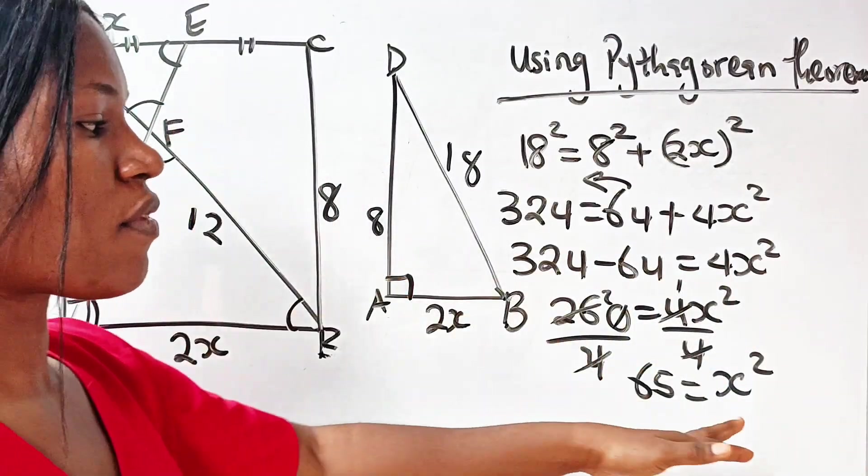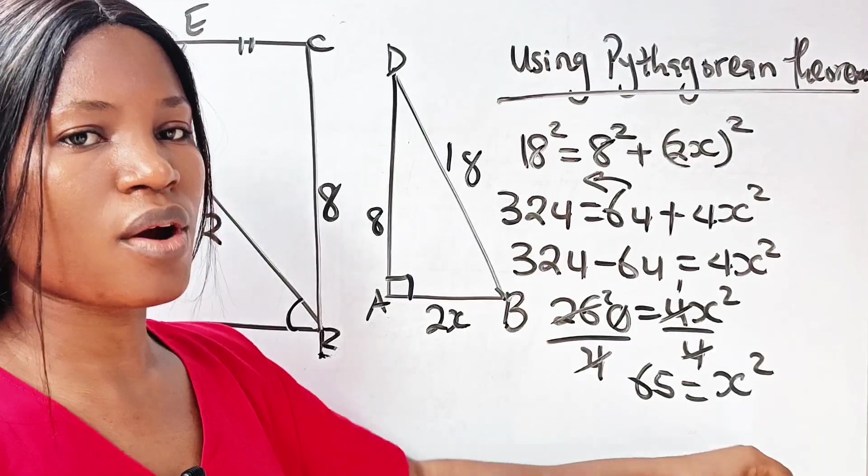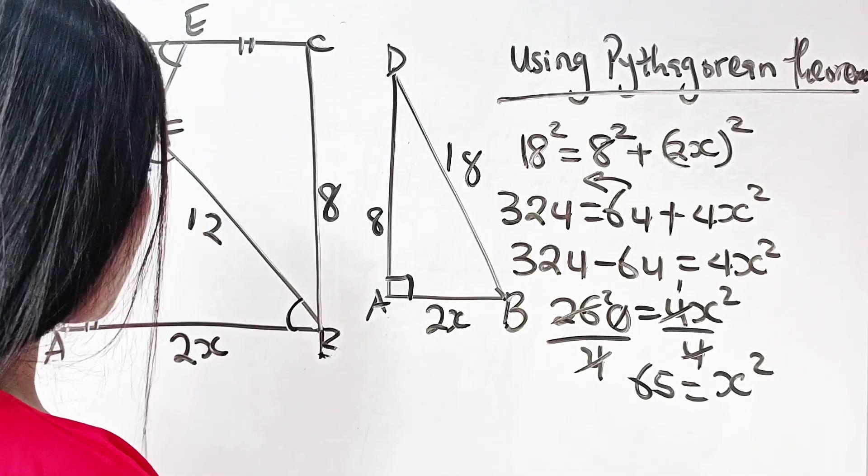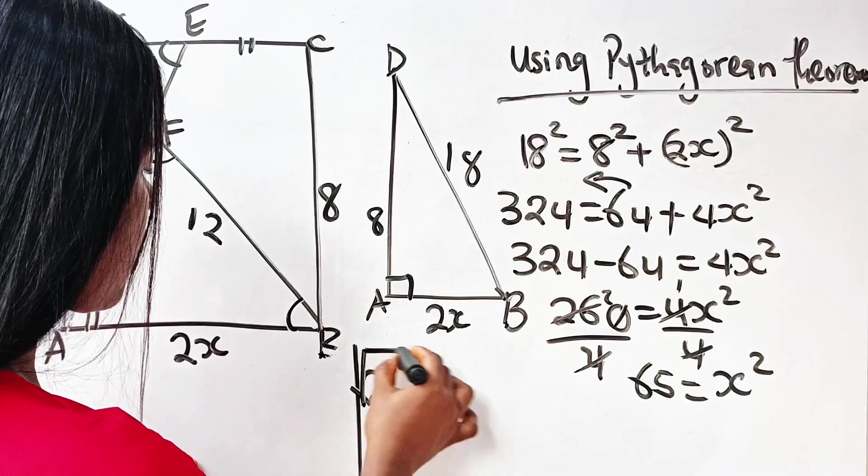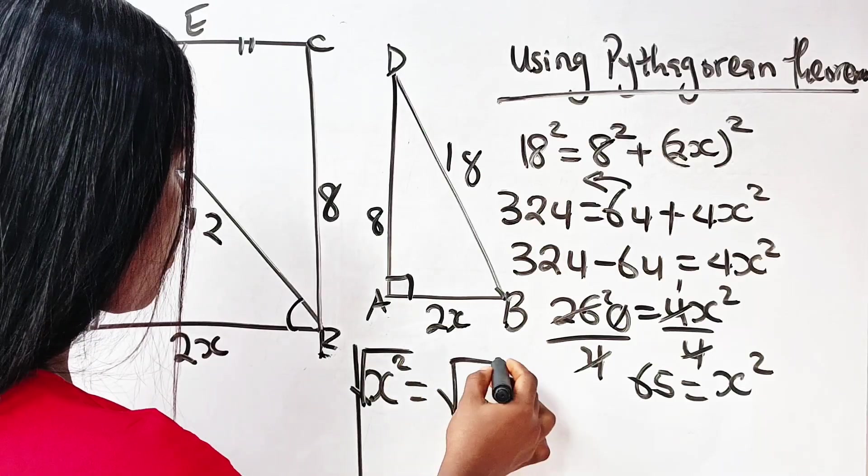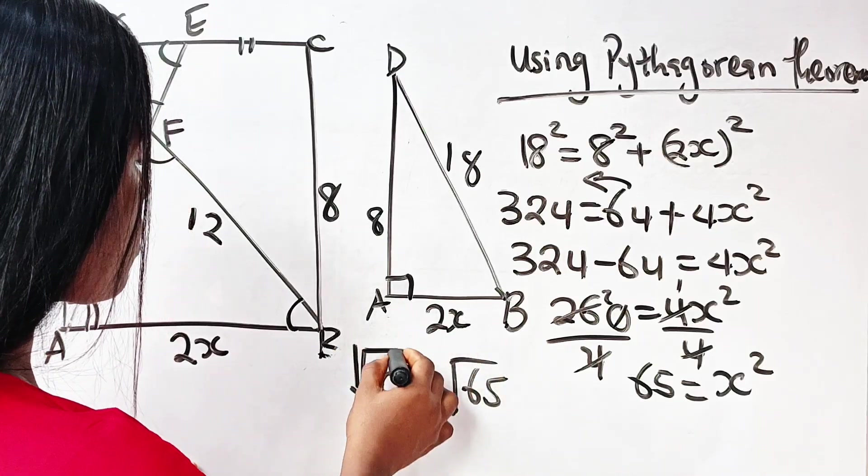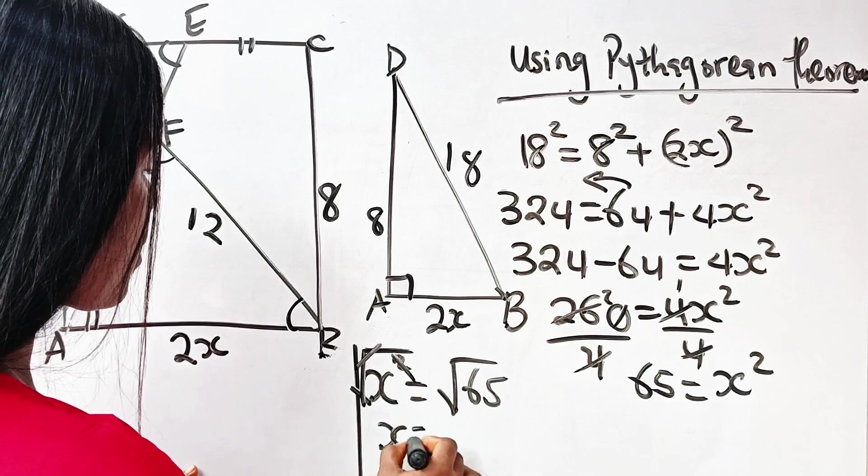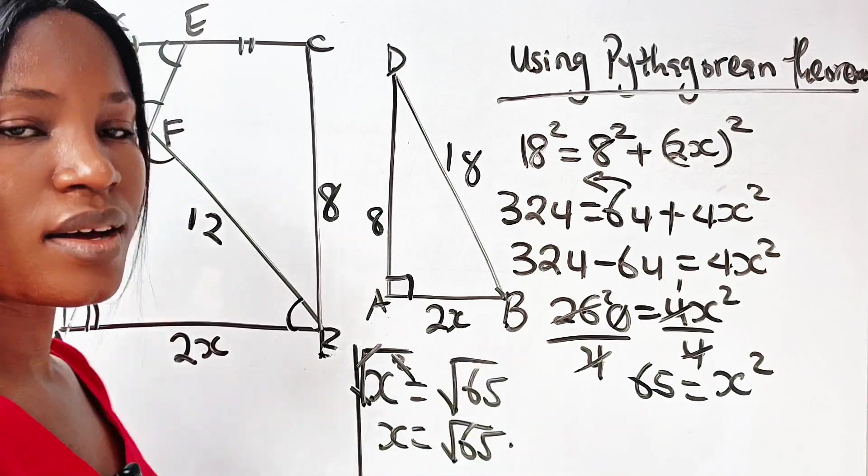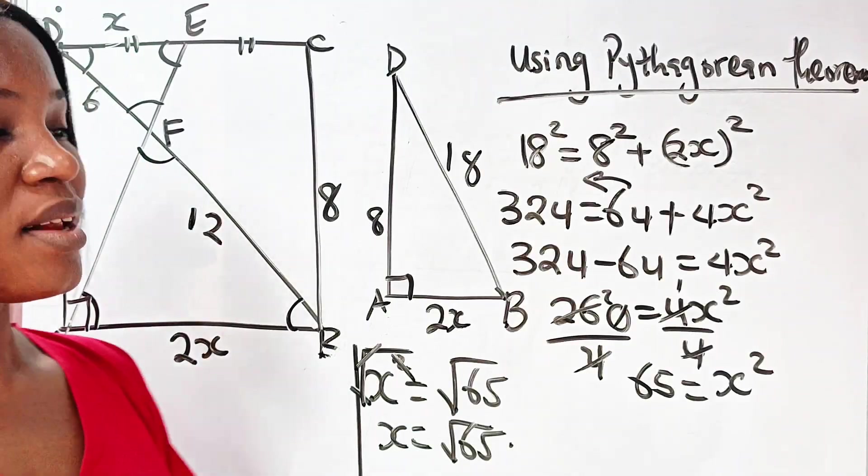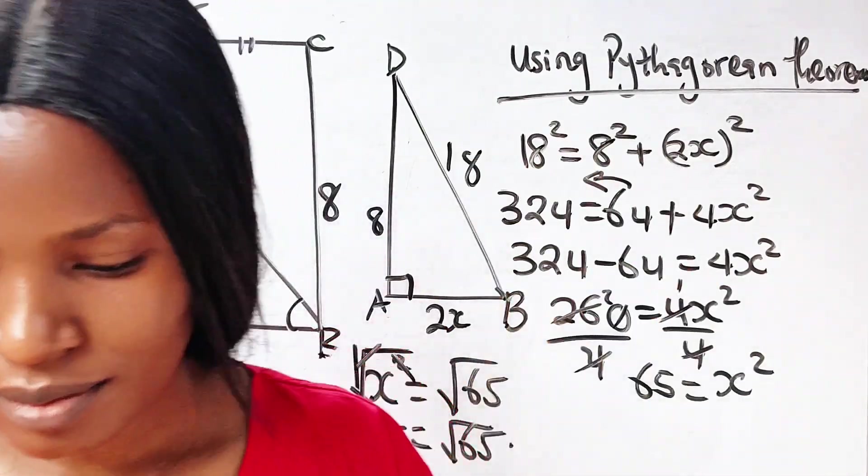But we are looking for the value of x, so we take square root of both sides. And if we do that, we'll have that square root of x squared is equal to square root of 65. So we remove this and we have that x is square root of 65, and that is our answer. Thank you so much for watching. See you in my next video.